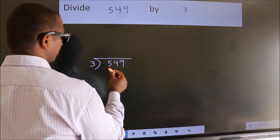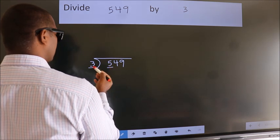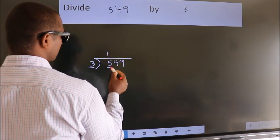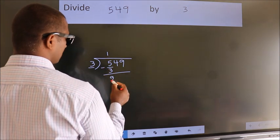Here we have 5, here 3. A number close to 5 in the 3 table is 3 once 3. Now, we should subtract, we get 2.